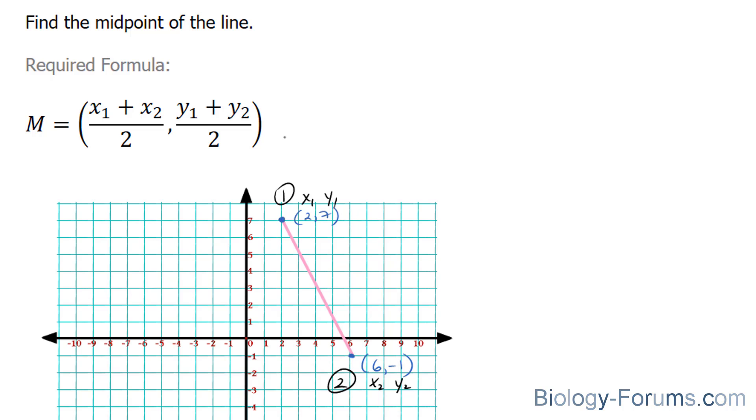That being said, all we have to do next is plug in these values into this formula. M is equal to 6 plus 2, divided by 2, and y1, which is equal to 7, plus negative 1, over 2.